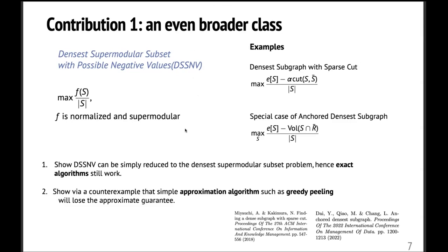And we make two non-trivial observations of this problem. So first, we show that DSSNV can actually be reduced to the original densest supermodular subset problem. So this means any exact algorithm for the densest supermodular subset problem remains exact for DSSNV. However, the picture of approximation algorithms is different. So we show by one counterexample that many simple approximation algorithms, such as greedy peeling, they will lose the approximation guarantee if you apply it naively to the DSSNV problem.